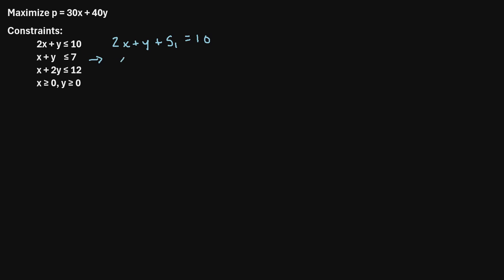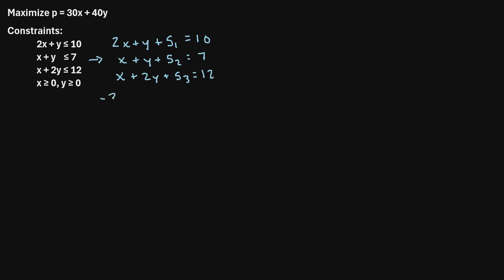Then we'll rewrite the next equation: x plus y, and we'll introduce a new slack variable s2, equal to 7. Then the last equation: x plus 2y, with one more slack variable s3 equal to 12. Lastly, we need to rewrite the objective function with all variables on one side, so we subtract 30x and subtract 40y. That gives us negative 30x minus 40y plus P equals 0.